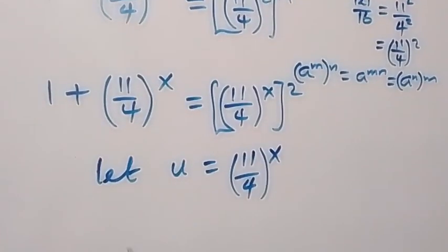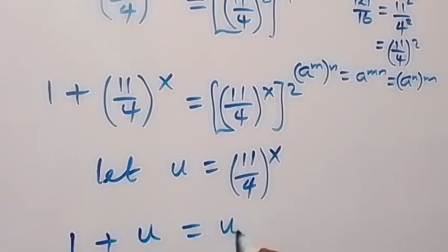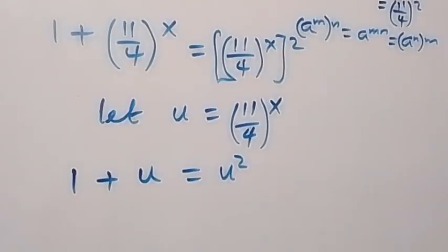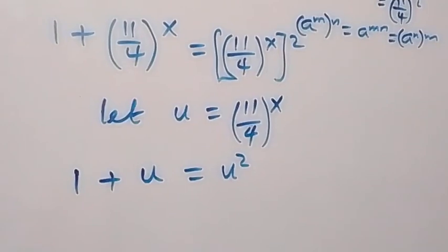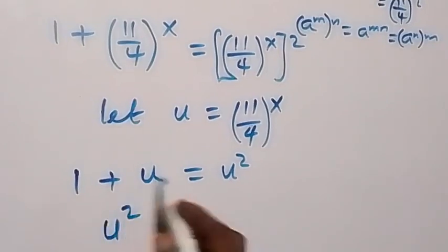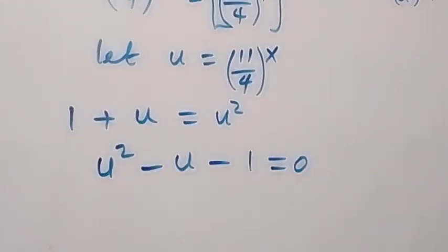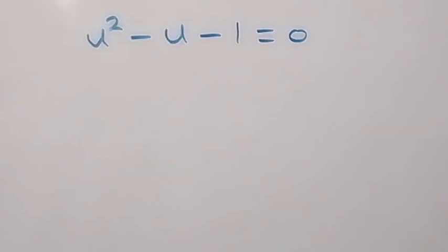We can write this in terms of u: 1 plus u equals u squared. Bringing everything to one side to form a quadratic equation, this becomes u squared minus u minus 1 equals 0.